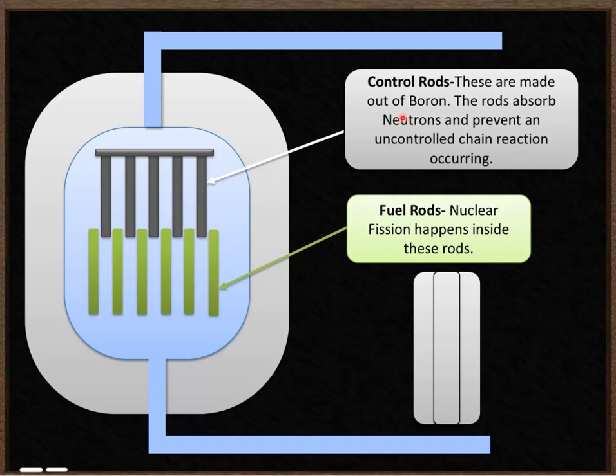These are control rods. They're made out of boron. And those rods absorb neutrons and prevent an uncontrolled chain reaction from occurring.